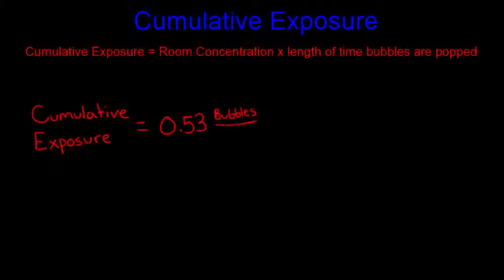Cumulative exposure is determined by multiplying the exposure concentration by the duration of the exposure. In our example, the exposure concentration was 0.53 bubbles per cubic meter, and our duration of exposure, the length of time the bubbles were popped, was two minutes. This gives us a cumulative exposure of 1.06 bubble minutes per cubic meter.